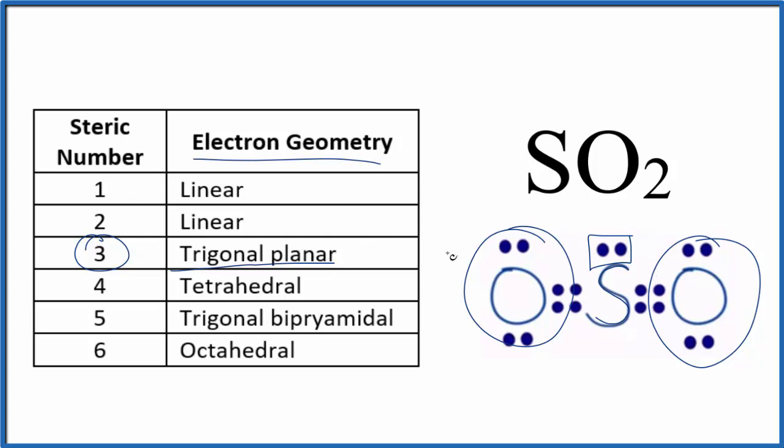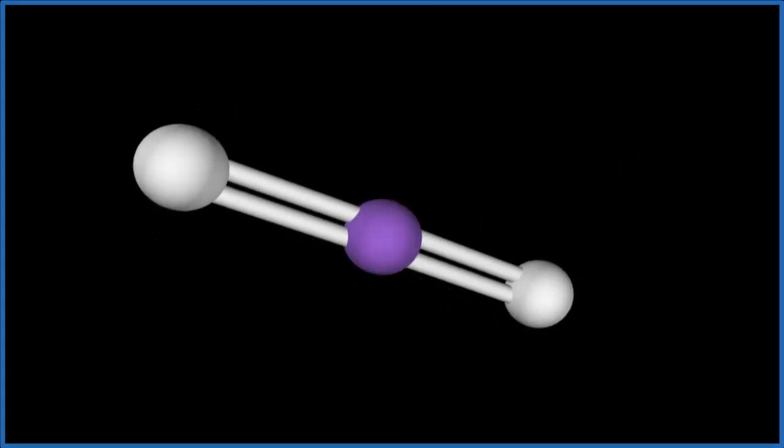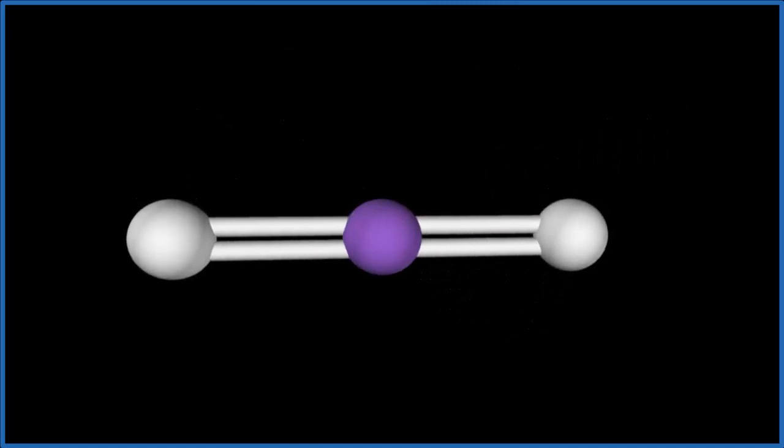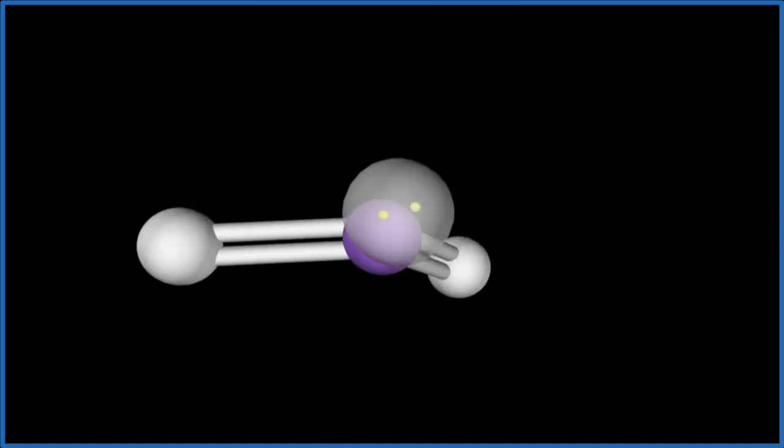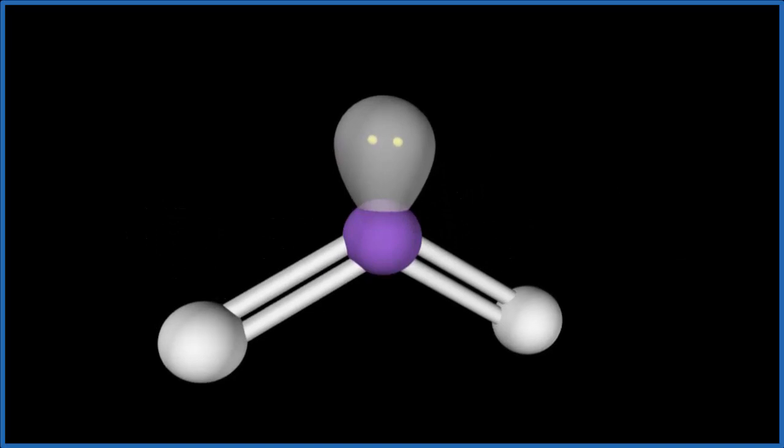Let's look at this in three dimensions. So we have our two oxygen atoms double bonded. There they are. They spread out. And then we have that lone pair. And you can see that lone pair pushes things down. And we get this shape here.